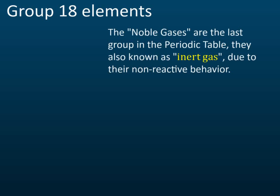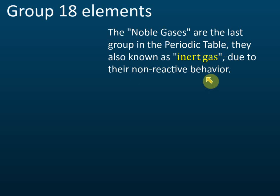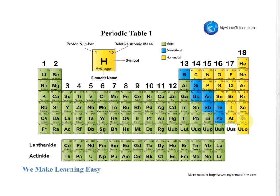Group 18 elements, also called noble gases, are the last group in the periodic table. They are also known as inert gases because they are non-reactive and do not react with any other elements. Looking at the periodic table, group 18 is located here.